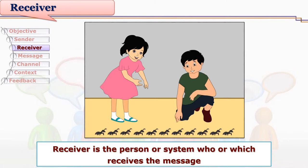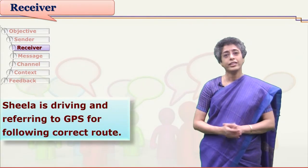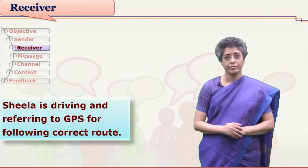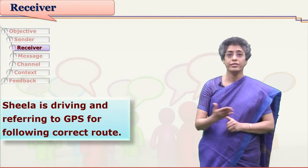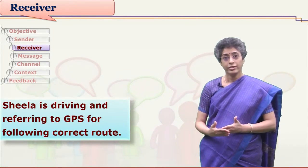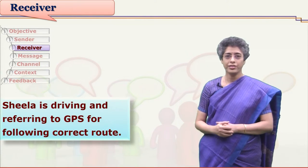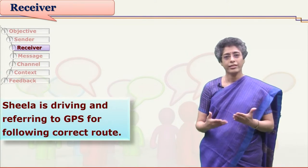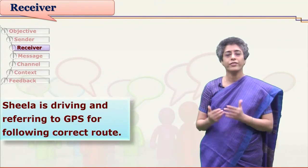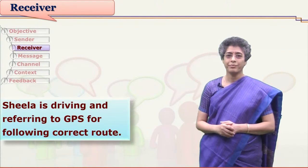The message reaches the receiver after starting from the sender. Just as the sender can be a person or a system, even the receiver can be a person or a system — or even a human being receiving messages from a system. For example, if Sheila is driving a car and referring to a GPS system,